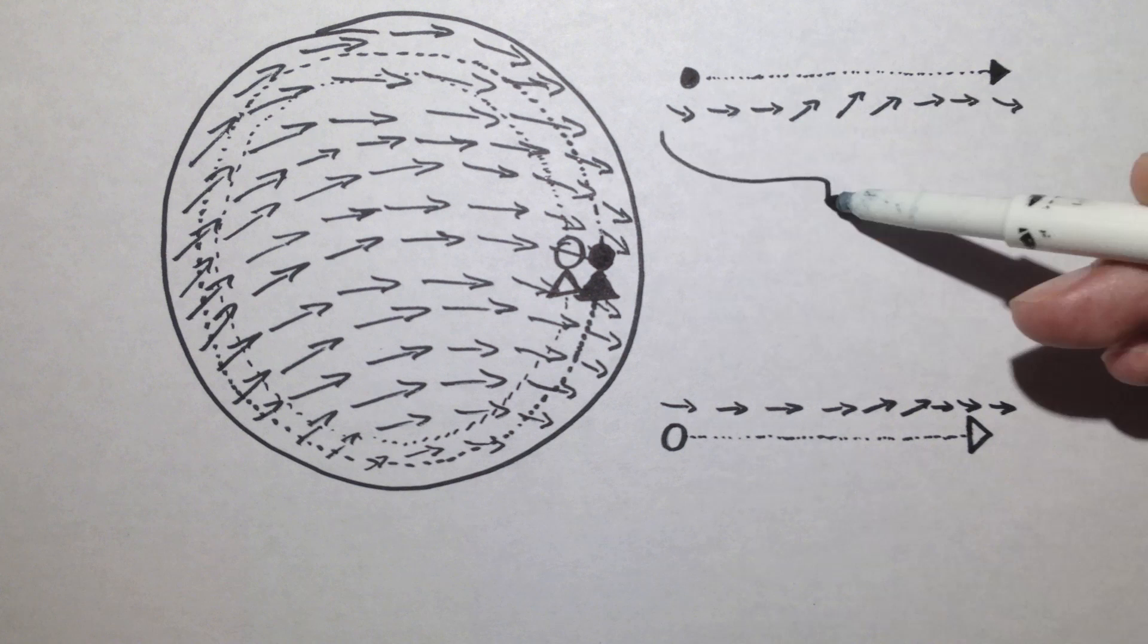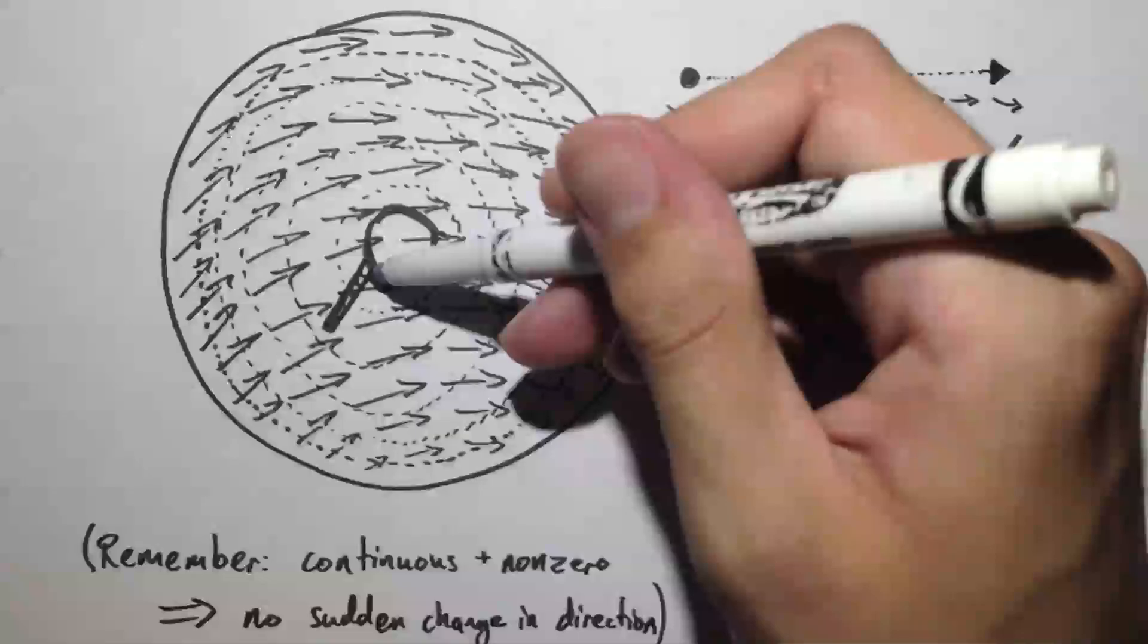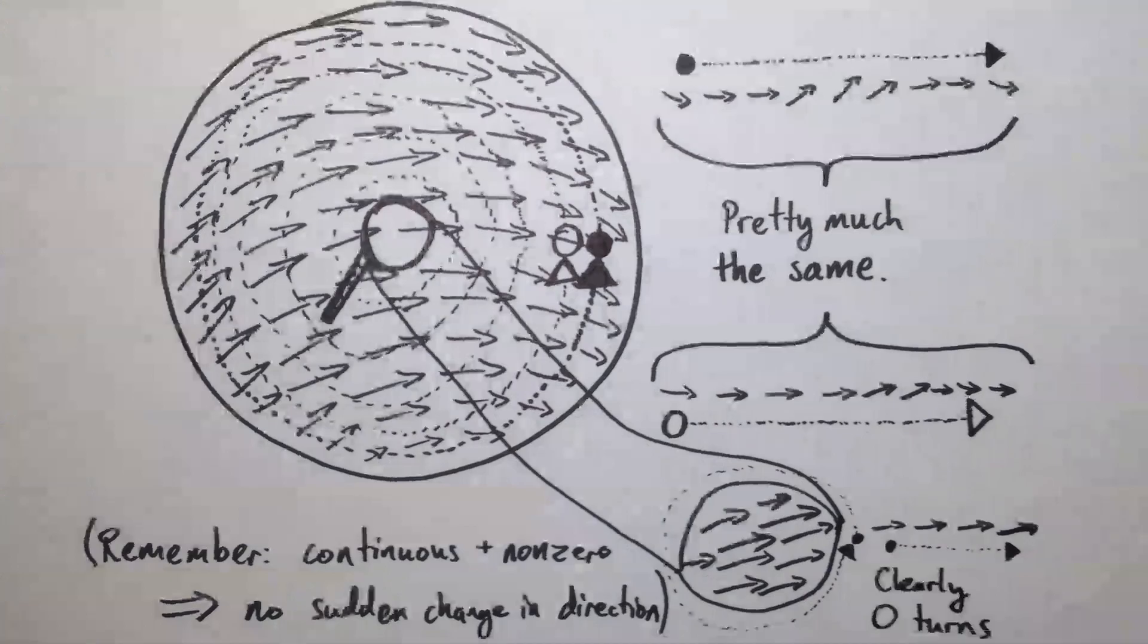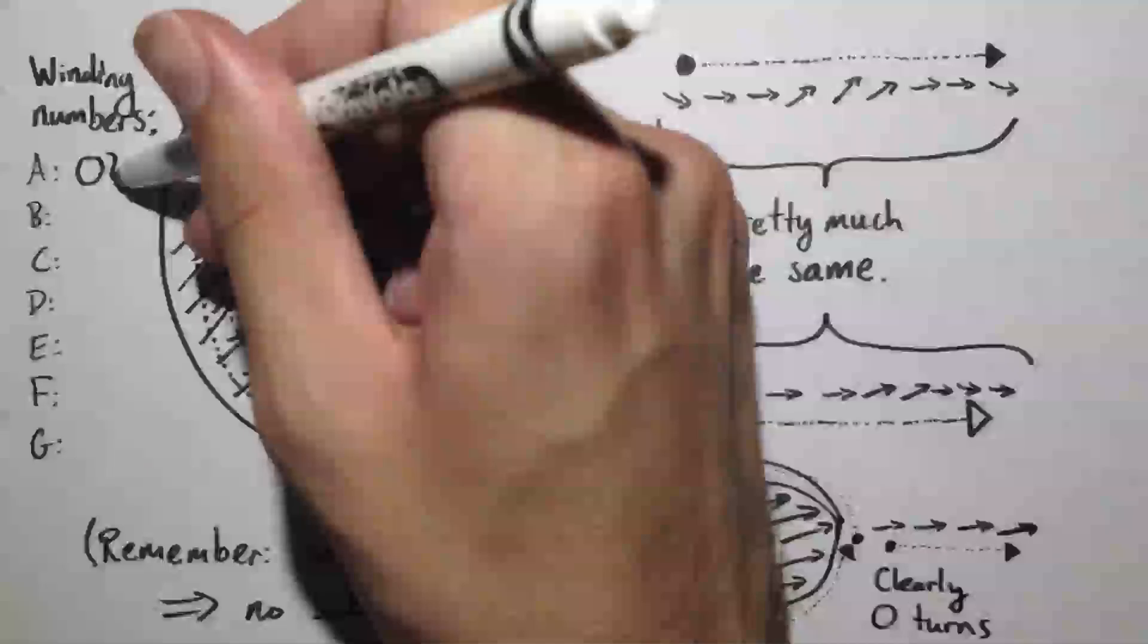We can keep doing this until our circle is so small that we know, again because of continuity, that all the vectors in it are facing in almost the same direction, in which case the winding number is definitely zero. But our winding number never changed during the shrinking, so it must have been zero to start with.